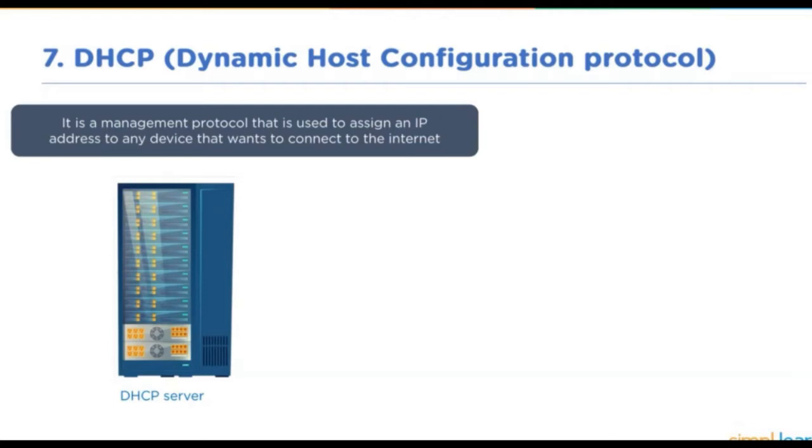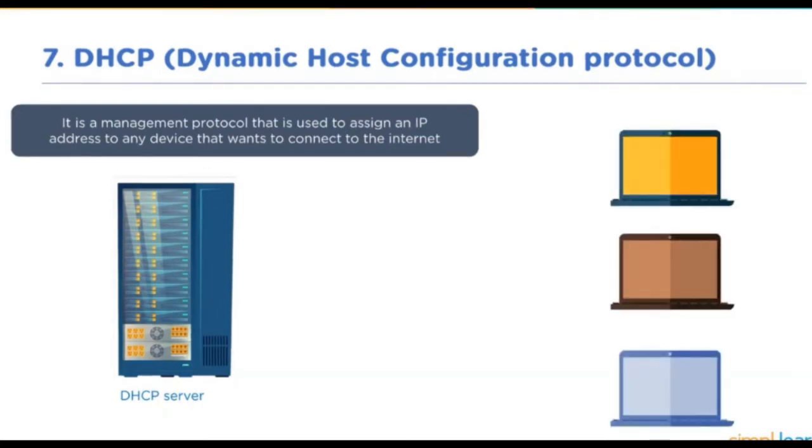Suppose there are these three computers that need IP addresses to communicate on the network. The DHCP communicates with these computers and automatically assigns them with an IP address along with other network details such as subnet mask information, default gateway, and DNS address. The first system is assigned the IP address of 10.0.0.1, the second system is assigned 10.0.0.2, and the third system is assigned 10.0.0.3.